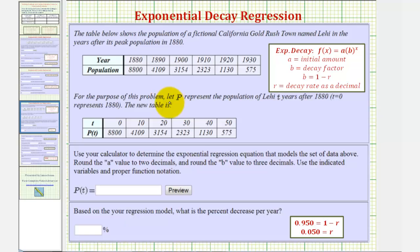For the purpose of this problem, we'll let p represent the population of Lehigh t years after 1880. So notice t equals zero represents 1880, t equals 10 represents 1890, and so on.